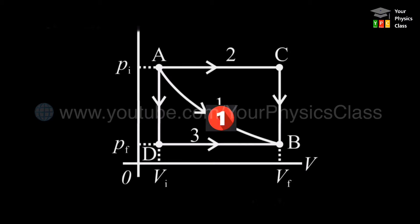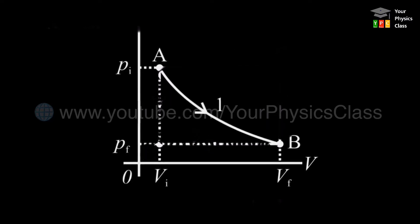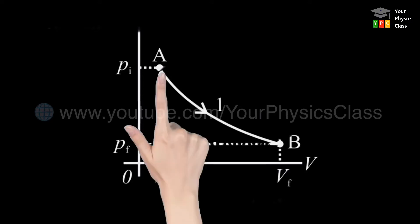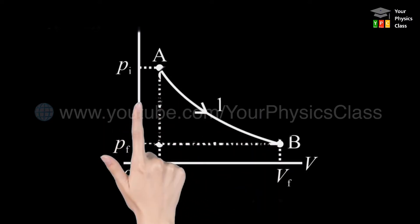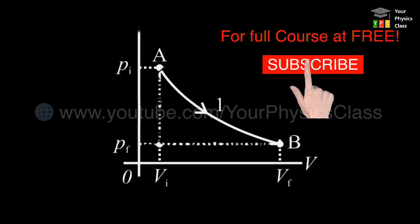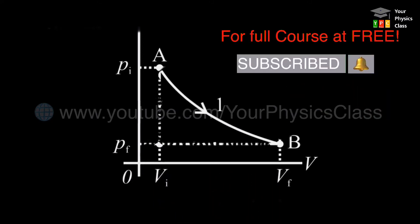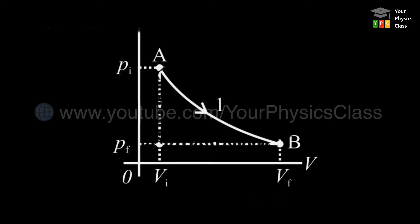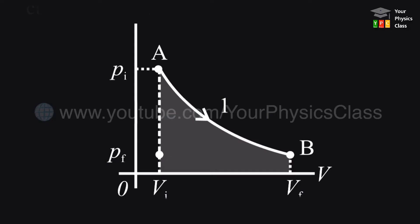The curves 1, 2, and 3 are the different ways in which the changes are brought about. Let us consider path 1. During path 1, pressure decreases as volume increases. In this case, the change in volume is positive, hence work done is positive. The work done in this process is represented by the shaded area under the curve.